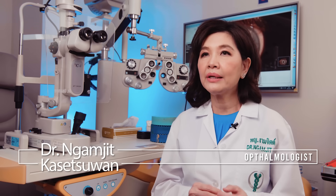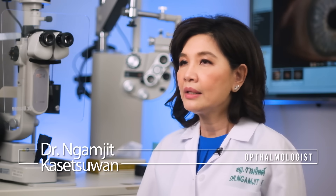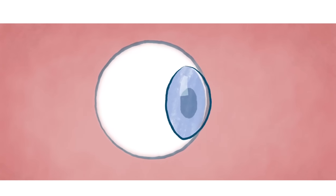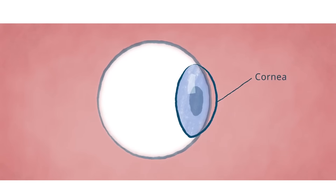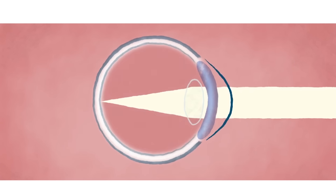The cornea is the outermost part of the eye, covered by the tear film. Normally, the cornea is transparent. It is about 500 microns thick and consists of 5 layers. The main function of the cornea is to refract or bend light from outside the eye in order to focus it onto the retina, resulting in good vision.